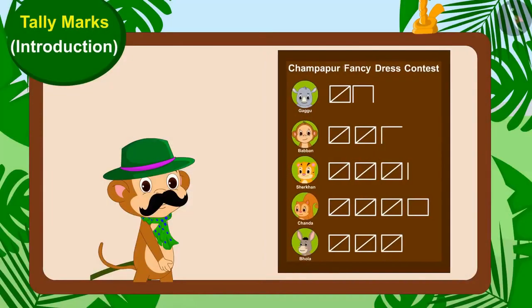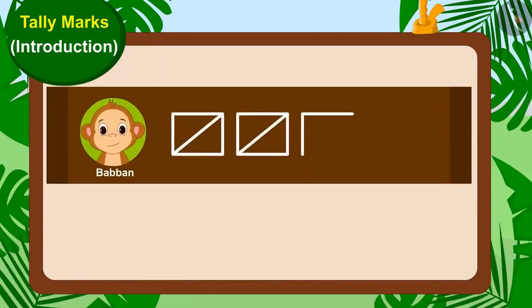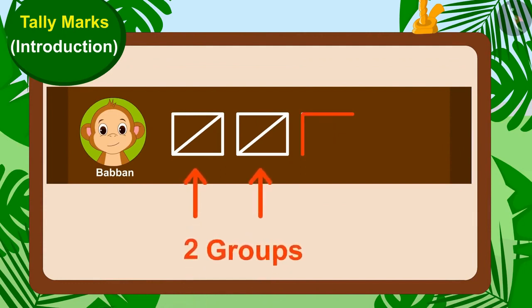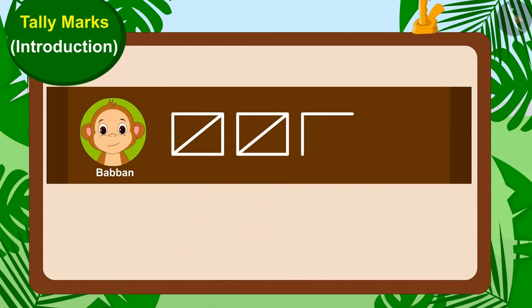Children, can you tell us how many votes Babban has got? Absolutely right. There are two groups of tally marks and two lines in front of Babban's name. This means Babban has got 12 votes.